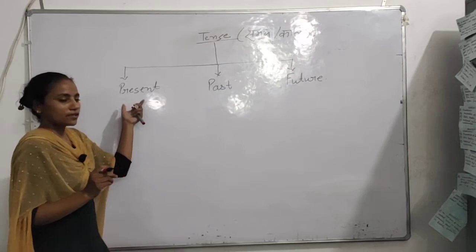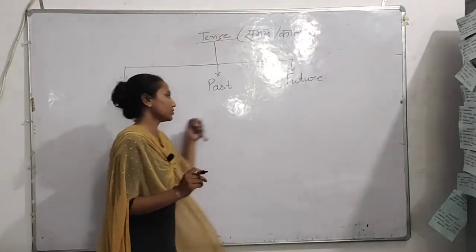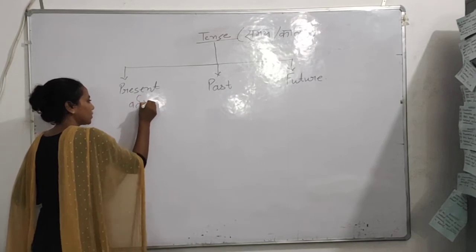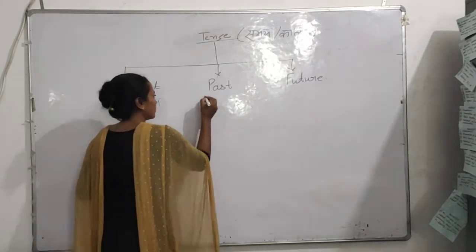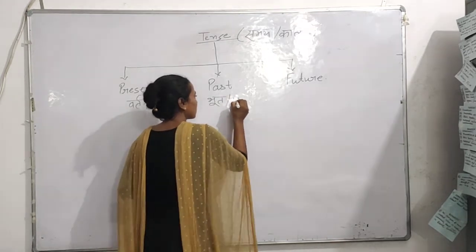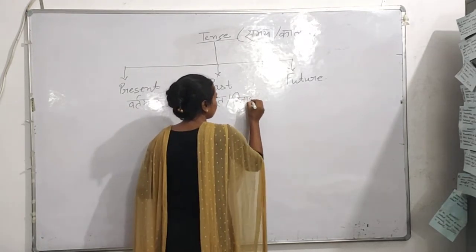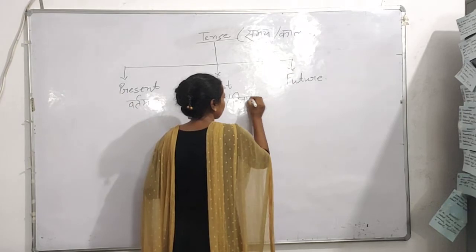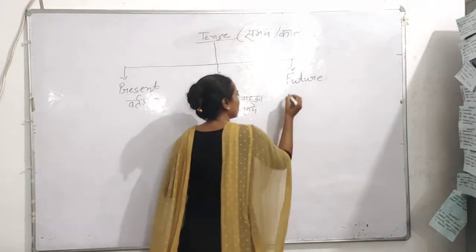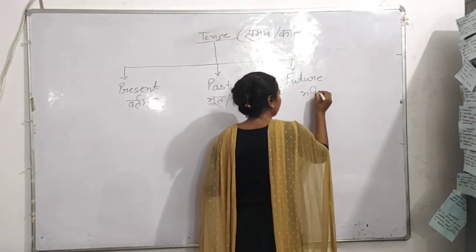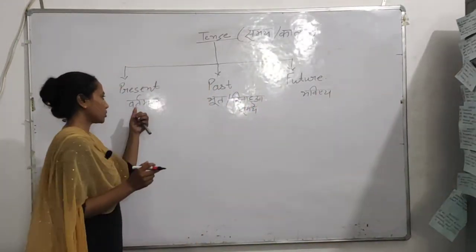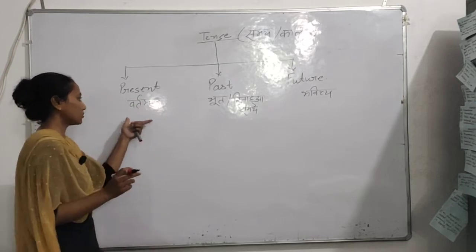Present, in Hindi, we call it 'Vartman'. Past, we call it 'Bhoot'. And Future, we call it 'Bhavishy'.